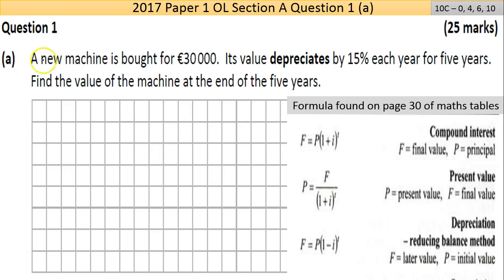Part A: A new machine is bought for €30,000. Its value depreciates, which means goes down, by 15% each year for five years. Find the value of the machine at the end of the five years.